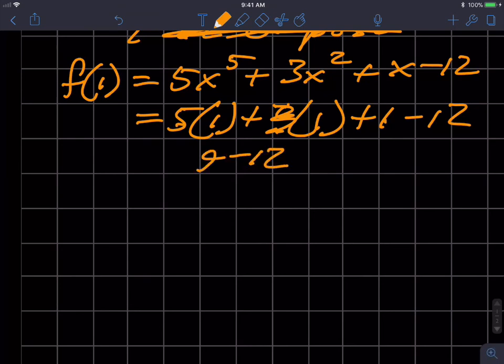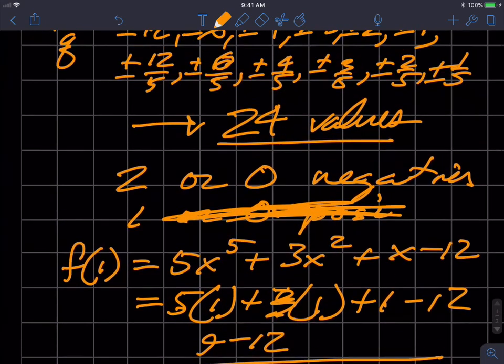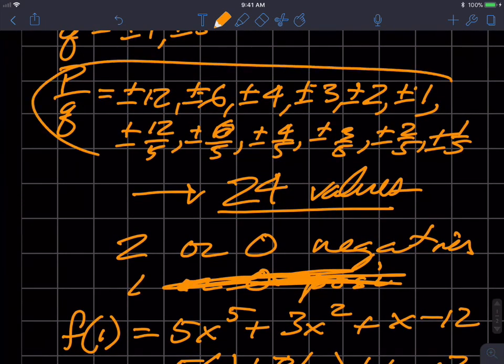1 doesn't work. And so because there's only one positive one, I try all the positive ones first. As soon as I get the one positive, all the other positive ones are gone. And then I would try negative ones. So Descartes' rule of signs is just to reduce this list of possible roots even further from what we've done from infinitely many to 24 and now to possibly, at most, two negative and one positive. So that's Descartes' rule of signs.